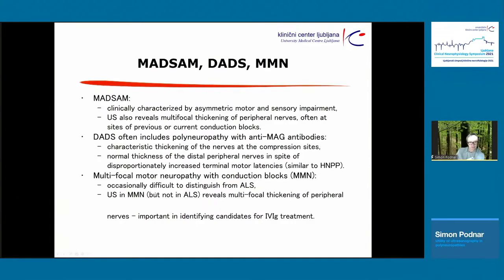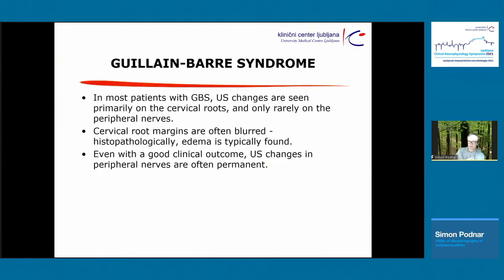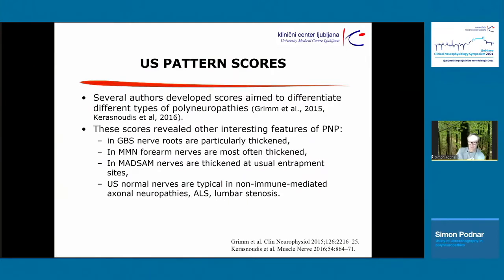In Guillain-Barré syndrome it is typical to find thickening of proximal nerves, particularly cervical nerve roots. Several pattern scores have been developed, and these scores teach us that in GBS nerve roots are thickened; in MMN, particularly the forearms; in MADSAM, at typical entrapment sites; and in typical axonal neuropathies such as ALS or lumbar stenosis, the nerves will be normal — which is sometimes also important information.